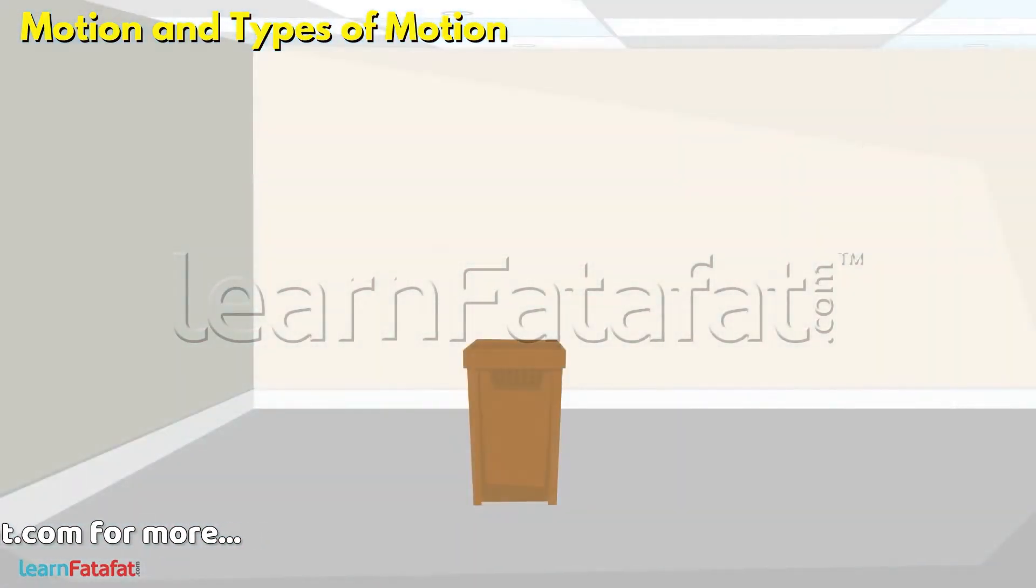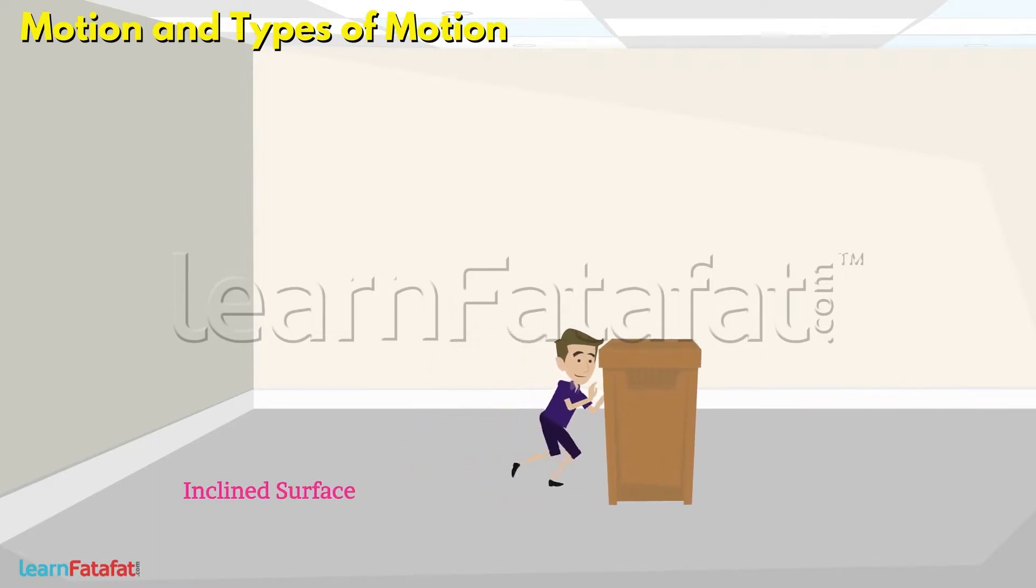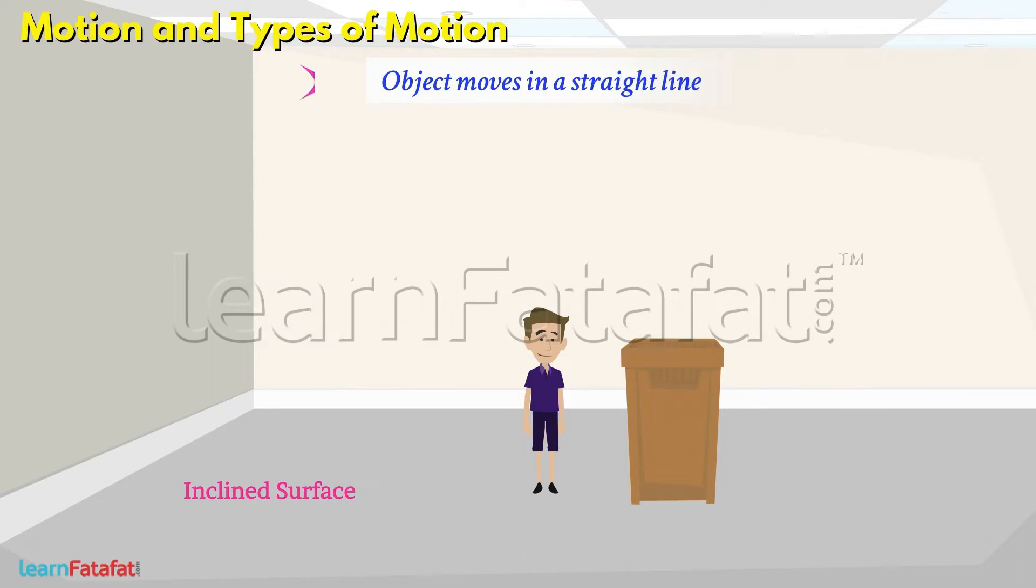Here is a box. If we keep it on an inclined surface and push it a little, it moves in a straight line. The motion in which an object moves in a straight line is called rectilinear motion.